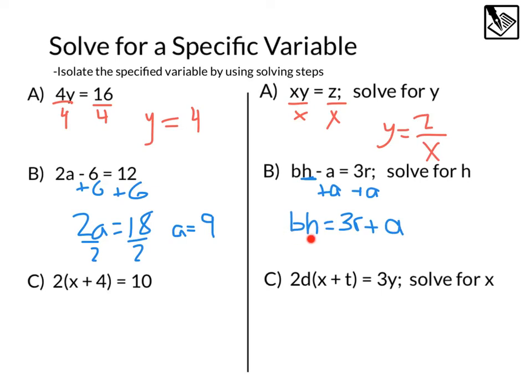Then I still need to get H by itself. This is B times H. So what we're going to do is divide this side by B, and divide this side by B. That's going to give us an answer of H equals 3R plus A over B. And again, it's okay to have all these variables because they're not the same. We can't combine them, we can't simplify. We're just going to leave it just like that.